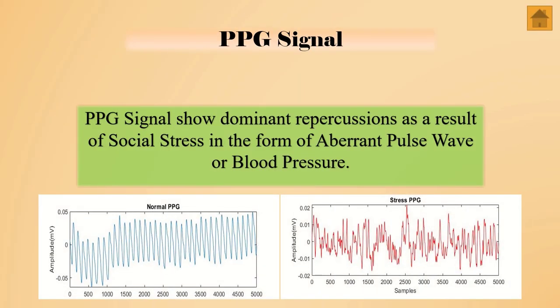Regarding PPG signals: it is a biomedical signal that we can acquire using the fingertip. It is very beneficial for analyzing anomalies like stress, because stress causes pulse waves to become aberrant and also deviates normal blood pressure. The figures illustrate how a normal PPG signal differs from a stress PPG signal.